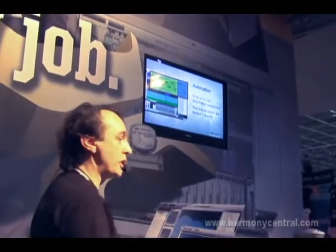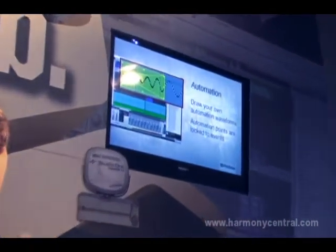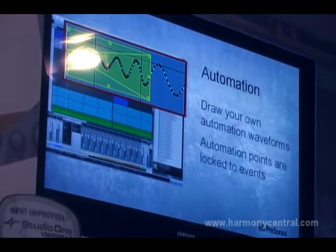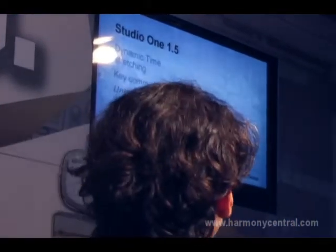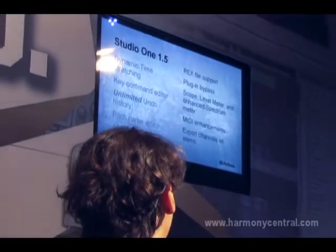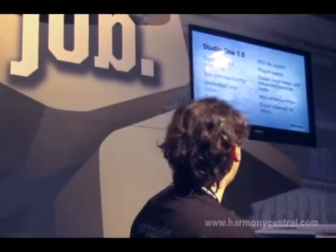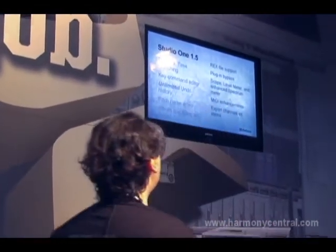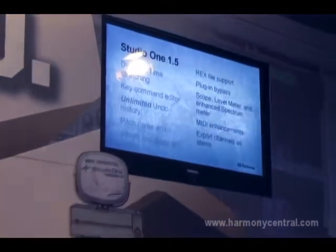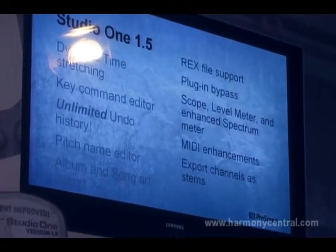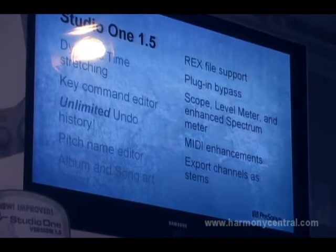Automation: we've added a lot of new automation features that people really wanted. Automation points are now locked to events, making them much easier to use. We've also added dynamic time stretch, a key command editor, unlimited undo, album and song art, and Recycle file support. You can drag a Recycle ReCycle file straight into Sample One — it automatically cuts it all up, makes it into a multi-sample for the sampler, builds a MIDI part, and lets you play it inside the sampler. Plus level meters, spectrum meters, and a lot of new MIDI enhancements including input quantize, which is actually undoable — pretty amazing.